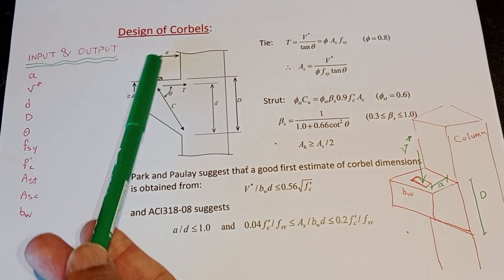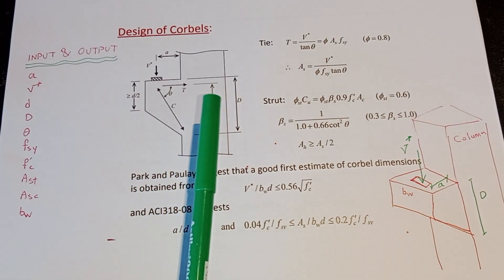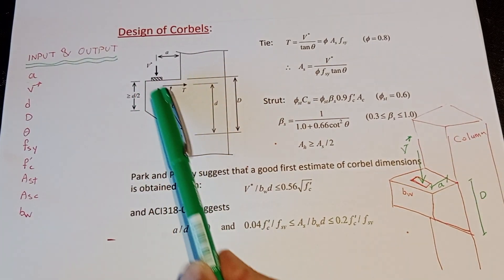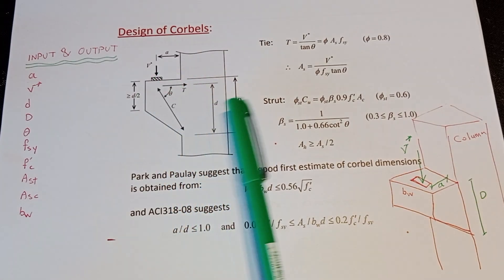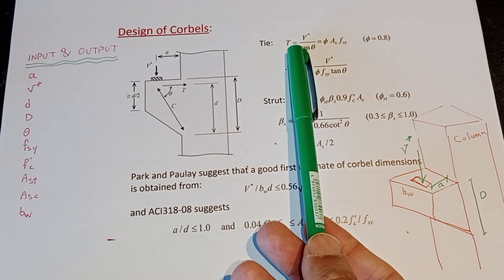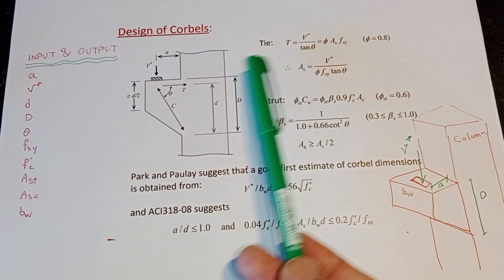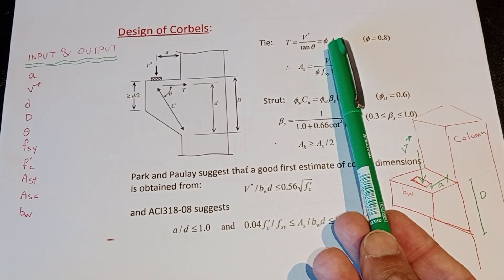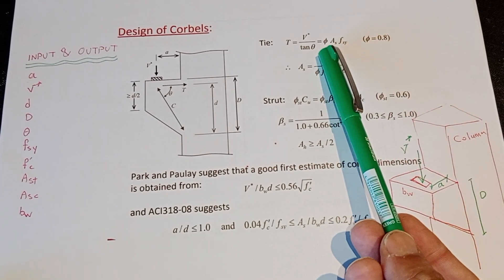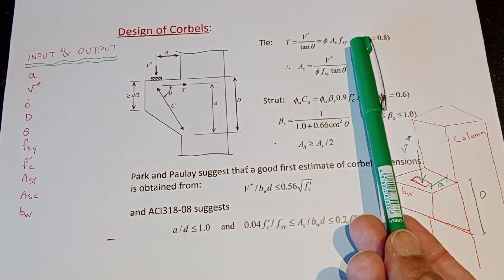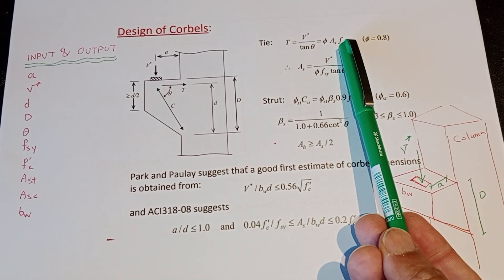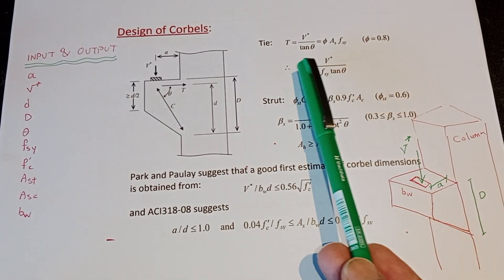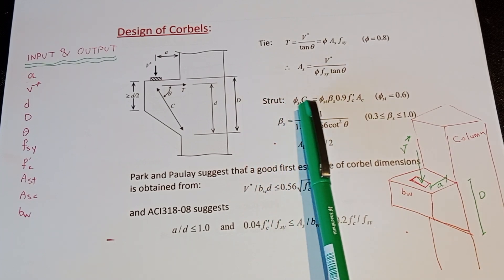From strut-and-tie theory, the corbel is designed on the basis of strut-and-tie action. We have a tie (tension) in one area and a compression strut in another. From the triangle relation, the tie force T = V* / tan(θ), where θ is the angle between the strut and the tie. The tie capacity is φ · Ast · fsy, where φ = 0.8 (Australian code — refer to your own national code). From this equation we can find the required tension reinforcement area Ast.